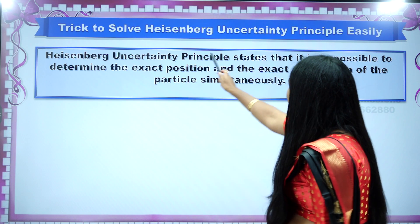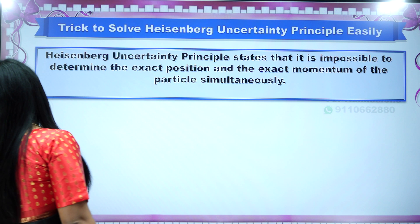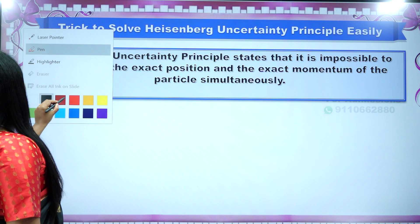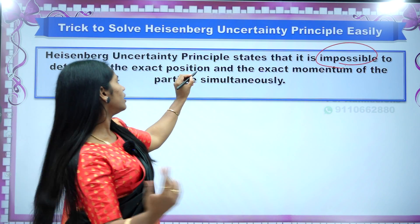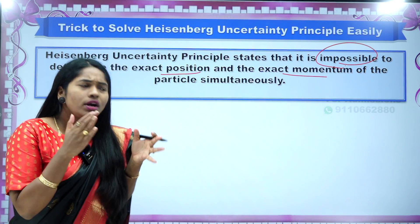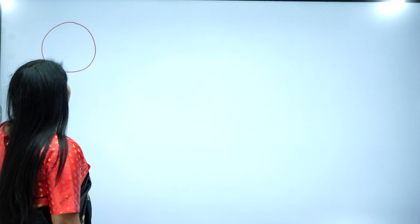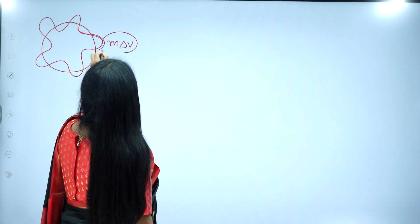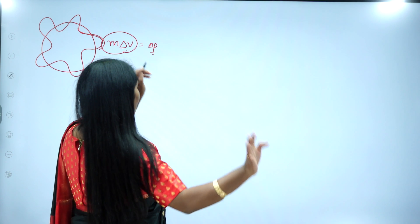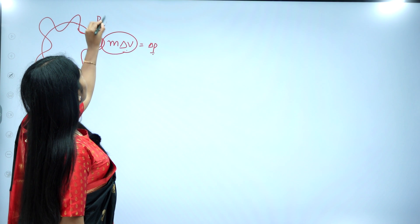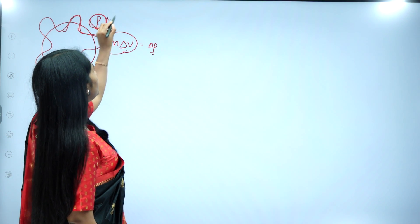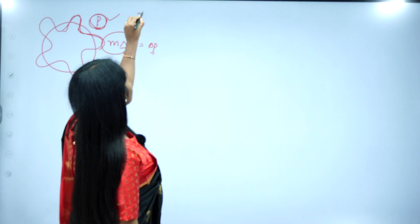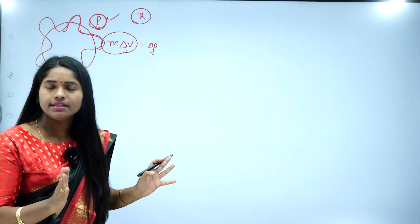Now, what does the Heisenberg uncertainty principle state? It states that it is impossible to find the exact position and exact momentum simultaneously. For example, this is a path where an electron is revolving. As long as an electron is revolving it is moving, and moving means it has some mass and is moving with certain velocity — this is called momentum. So you can say it has speed and momentum, but you can't tell its position x. This is the Heisenberg uncertainty principle simply stated.